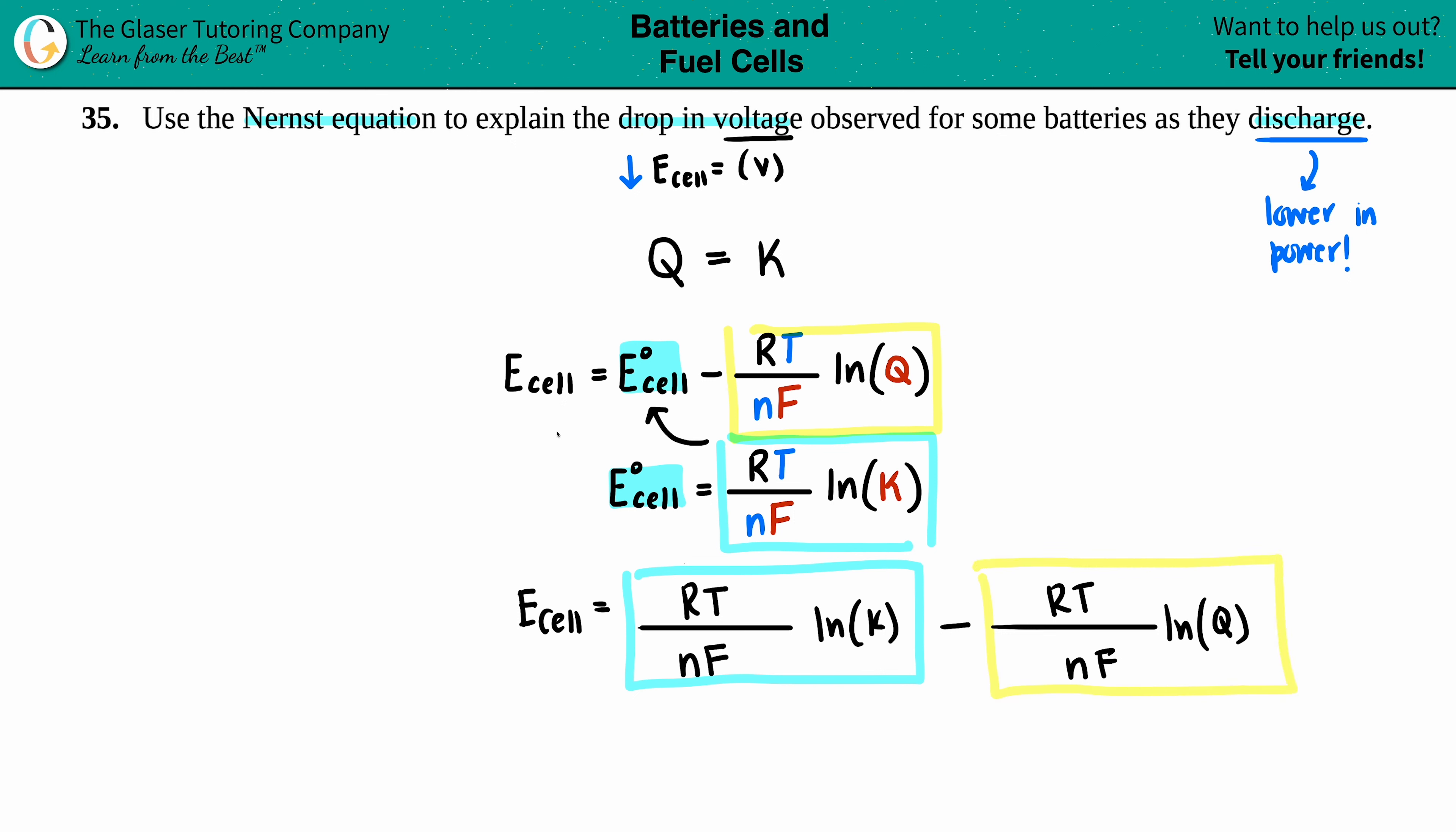Alright, now I can do some simplifying here. I see that for both of them I have RT over nF in both variables, so I can pull them out. So the E_cell equals RT divided by nF, and now what's left behind is ln(K) minus ln(Q).